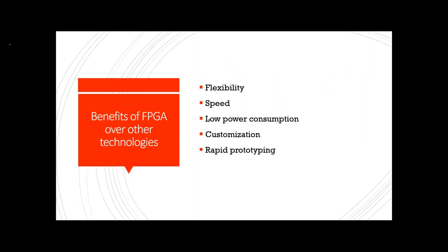Why do we use FPGA? One reason is flexibility. With ASIC, the time to market is high — you write Verilog, do physical design, go for production, and if any issue is found in the IC, you have to repeat the entire cycle. The cost involved is huge. You go for ASIC only when your production volume is high — like Qualcomm Snapdragon, where millions of ICs are produced.